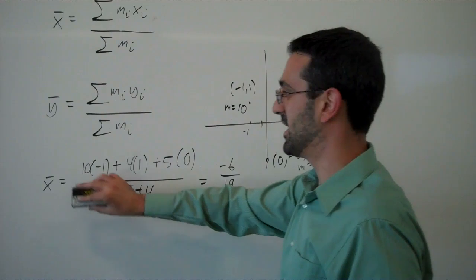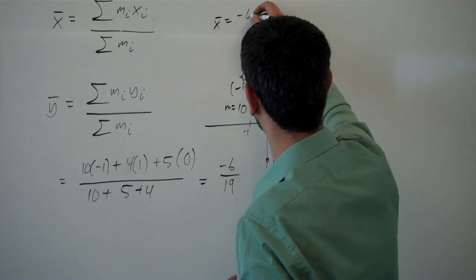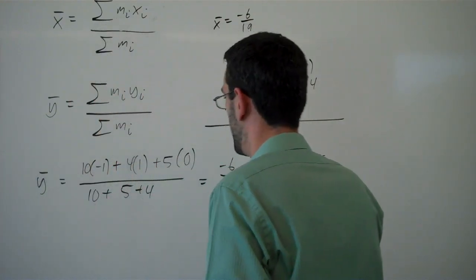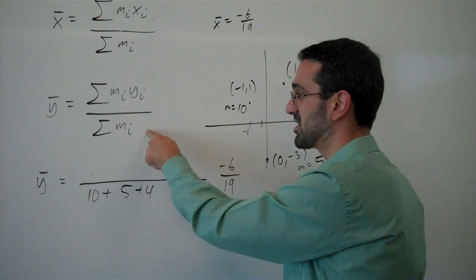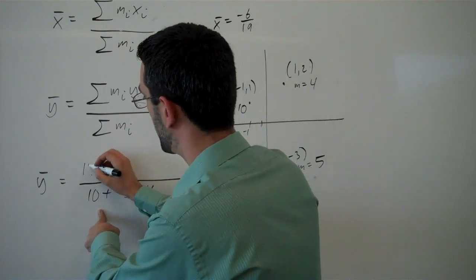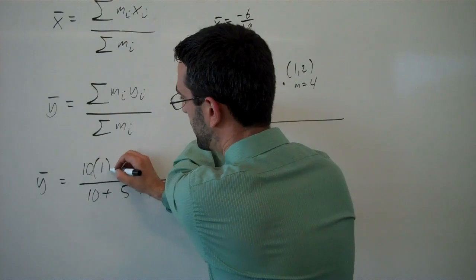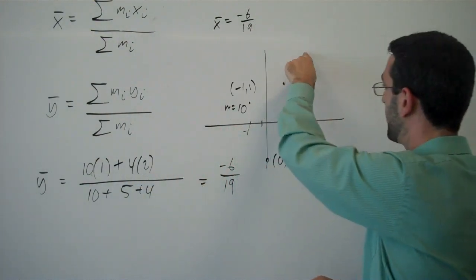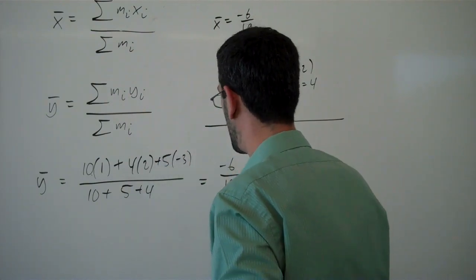For the y center of mass, so x̄ was -6/19. For the ȳ, the denominator stays the same, sum of the masses. In the numerator, I've got a mass of 10 at a y value of 1, a mass of 4 at a y value of 2, and a mass of 5 at a y value of -3.